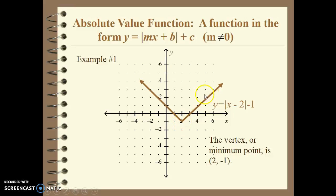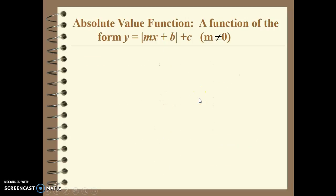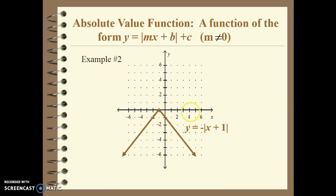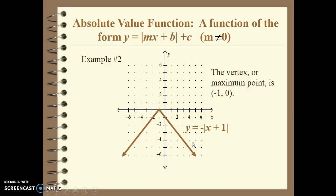If we plug in values — for x equals 3, we get the absolute value of 3 minus 2, which is 1, minus 1, and that hits at 0. So absolute value functions create this V-shape. Another example uses a negative absolute value, so it reflects over the x-axis and makes the V-shape pointing down. We can plug in values for x; for x equals 0, we get a positive 1 inside the absolute value, and then the negative makes it negative 1. The vertex on this is the maximum point, which is at (negative 1, 0).